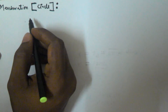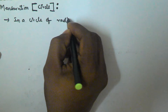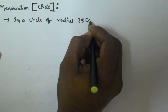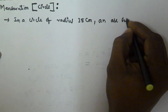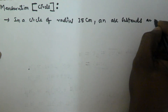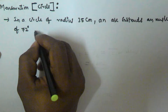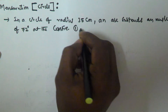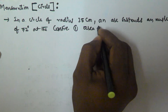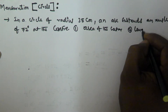Hello friends, in this video we will see a problem related to the circle. The problem is: in a circle of radius 35 centimeters, an arc subtends an angle of 72 degrees at the center. We have to find the area of the sector and the length of the arc.